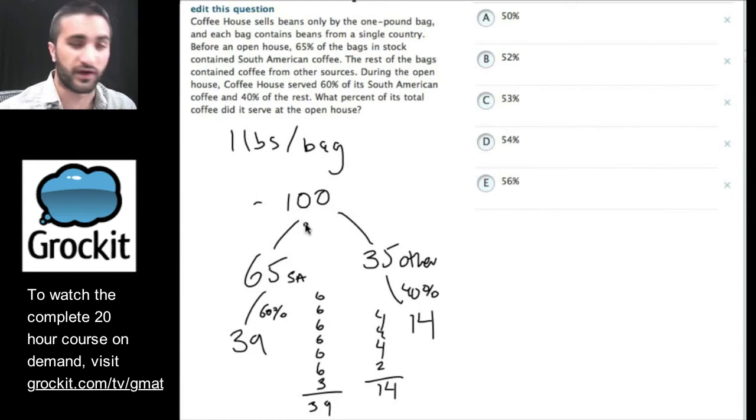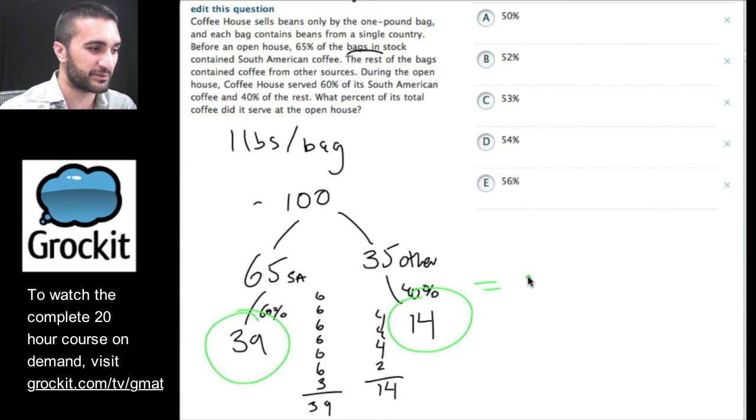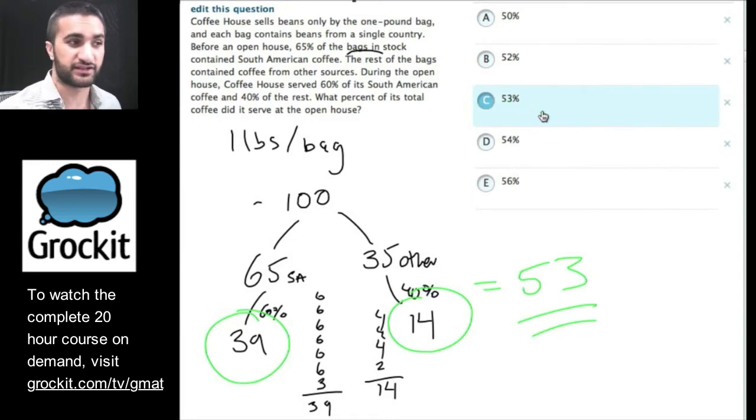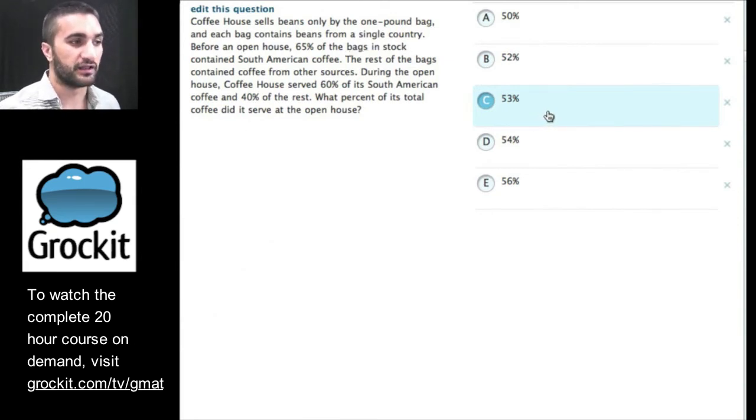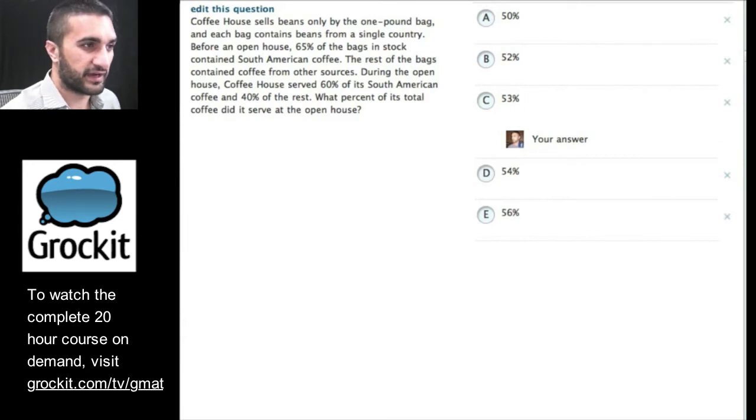What percent of its total coffee did it serve at the open house? Well, since we started with 100 as the actual number of bags in stock, these numbers that are solid numbers of bags can also translate to percent. So, we get 39 plus 14. Everyone tell me in the embed, what is 39 plus 14? We should be able to handle this part. Everyone should get 53. And if we take a look, 53 is an answer choice. Hopefully, it's not the GMAT messing with us. Let's go ahead and pick that and see if we're correct.